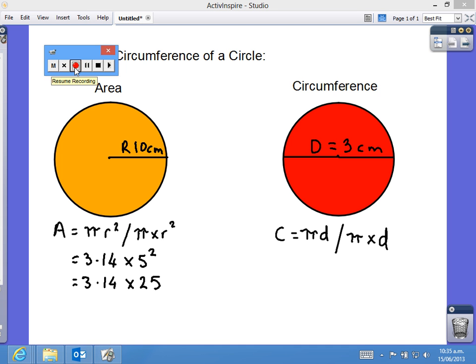So, 3.14 times 25 equals 78.5 centimeters squared. For area, we're working in two dimensions.